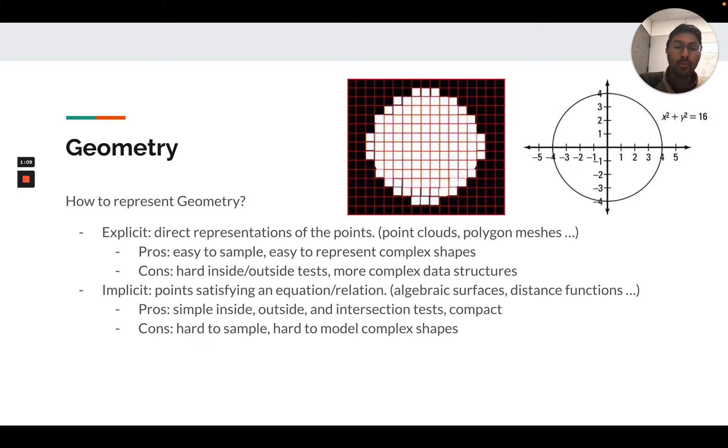Explicit representations are direct representations of the shape. These could be points like on a point cloud on the surface, voxelized grids which would be a discretized structure, shown in 2D here as a 2D discretization of a shape, a circle. We could use polygon meshes, and in this class, in graphics, triangle and quad meshes are extensively used.